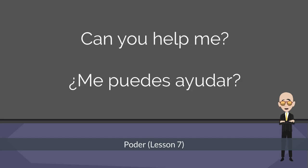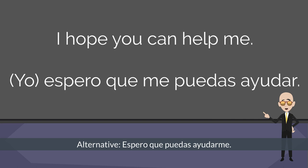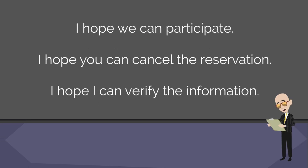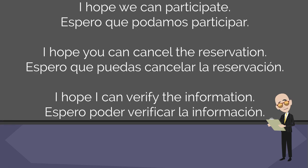What I'd like you to do is start going back through some of your previous lessons and plugging the subjunctive into things you've already learned. Take a look at this sentence: Can you help me? — ¿Me puedes ayudar? You just make a few small changes and you come up with something like: I hope you can help me — Espero que me puedes ayudar. You can even utilize your TION/CION cognate trick from the beginning of the course to translate sentences like: I hope we can participate — Espero que podamos participar. I hope you can cancel the reservation — Espero que puedas cancelar la reservación. I hope I can verify the information — Espero poder verificar la información.